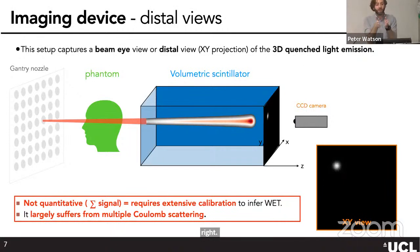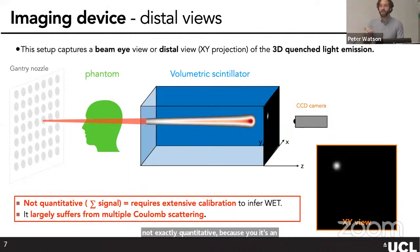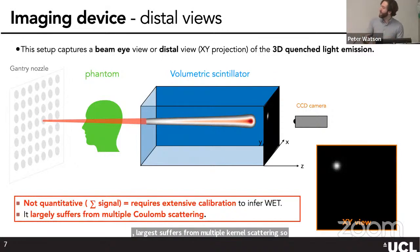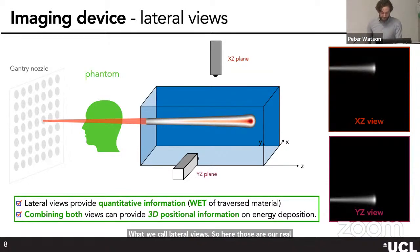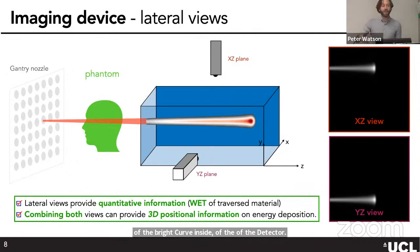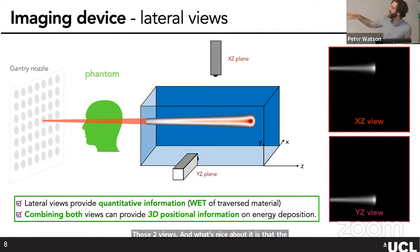The most common approach is placing a CCD camera at the distal end of the scintillator, which integrates all light along the beam spot. However, this suffers greatly from multiple Coulomb scattering — protons scatter a lot inside human tissues — leading to very blurry images. The better approach is using lateral views, where you get 2D views of the Bragg peak inside the detector. Our setup uses two lateral views — a top view and a lateral view.